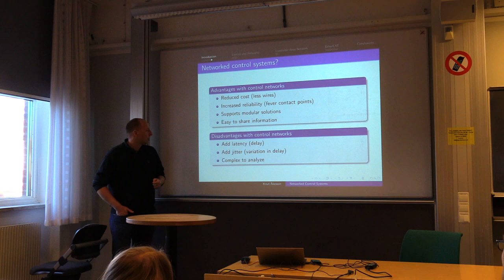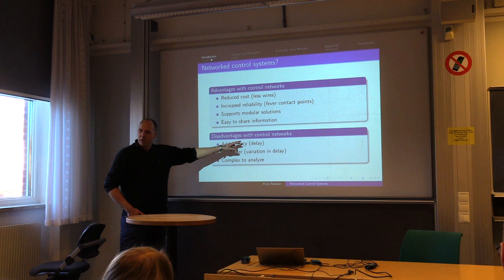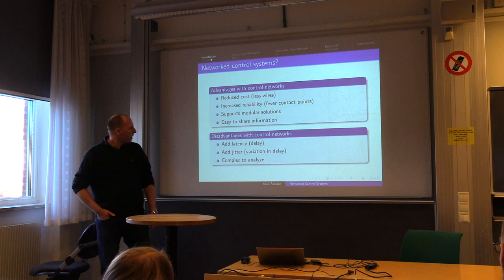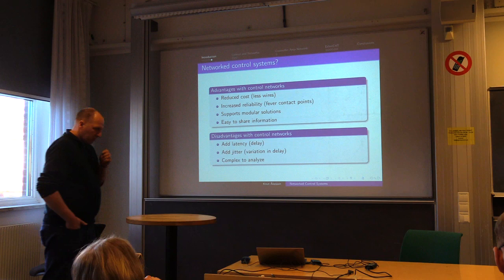There are also a number of disadvantages with having control networks. I will talk about latency — which you can think of as delay — and jitter, which is the variation in delay, both of which make the closed-loop behavior very complex to analyze.